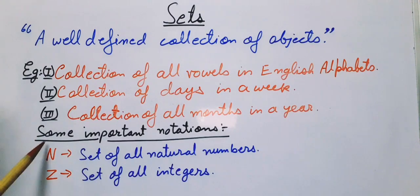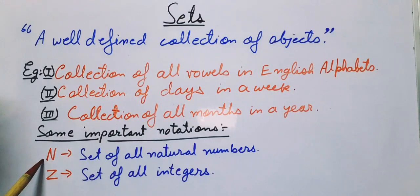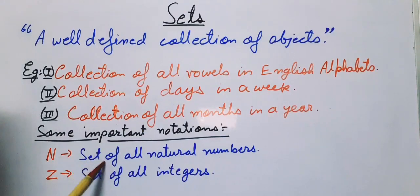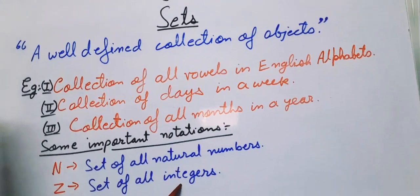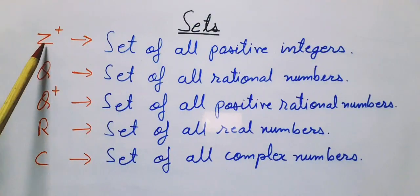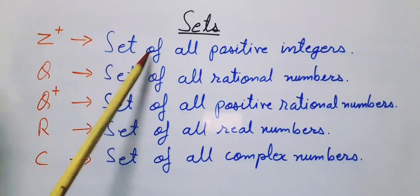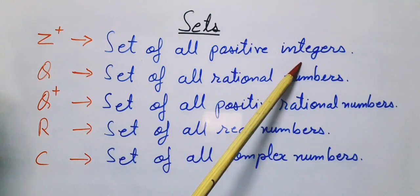Now we will discuss some important notations. First one is capital N, which stands for set of all natural numbers. The other one is capital Z, which stands for set of all integers. Z+ stands for set of all positive integers.